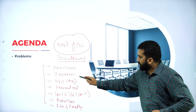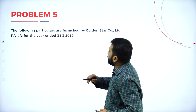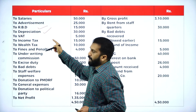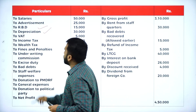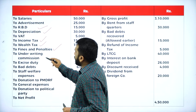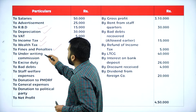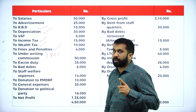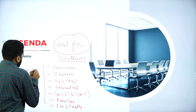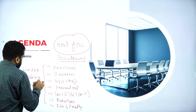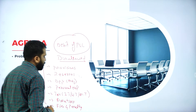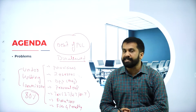Remember the points: salary will not come as a disallowed item, advertisement will not come. RBD is a reserve - reserves are disallowed. Depreciation will come because we have an adjustment. Income tax will come, wealth tax will come, fines and penalties will come. Then underwriting commission: 80% is disallowed. Remember, underwriting commission - 80% we are supposed to consider as a disallowed item.